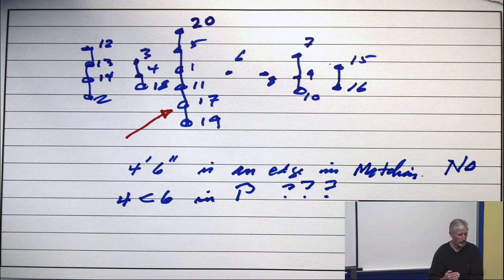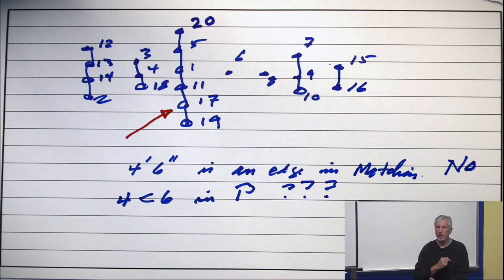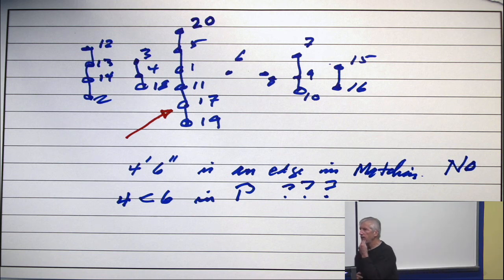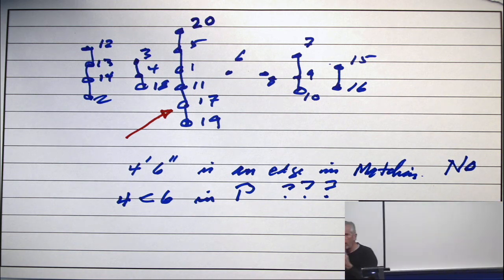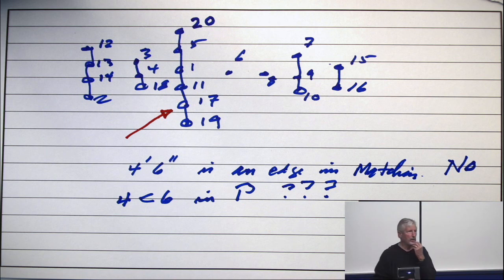20 prime to something double prime. So, is there such an edge in the matching? No, there's no, the flow out is not used.